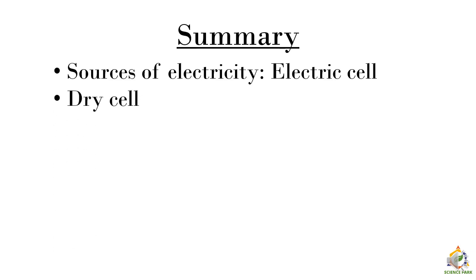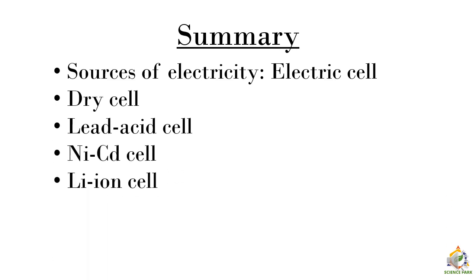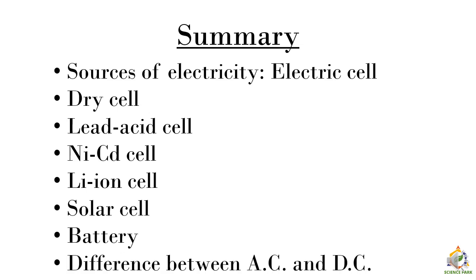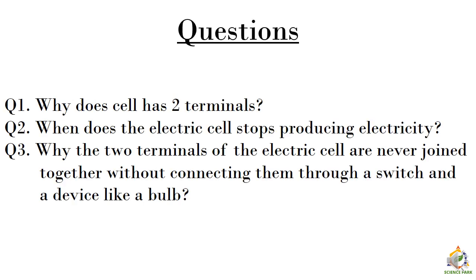Let's summarize our session. First we have seen the sources of electricity, that is electric cell. Then we have seen different types of electric cell and the properties such as dry cell, lead acid cell, nickel cadmium cell, lithium ion cell, solar cell. And then we have seen what is battery. And in the end, the difference between AC and DC, that is alternating current and direct current. Here are some questions. You can pause the video here, note these questions down and write the answers to it. Thank you.